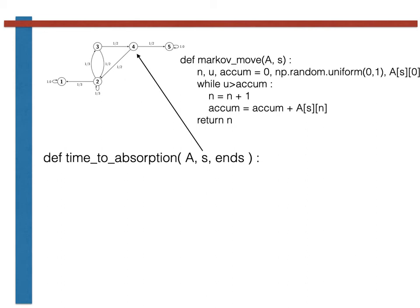The final argument to this function, ends, is a 1D numpy array. This 1D numpy array contains a list of the indexes of all the recurrent states in the chain. For the transition graph shown at the top of the slide, ends is thus a 2-element array that contains the numbers 0 and 4. These are the indexes of the two recurrent states in our transition matrix.